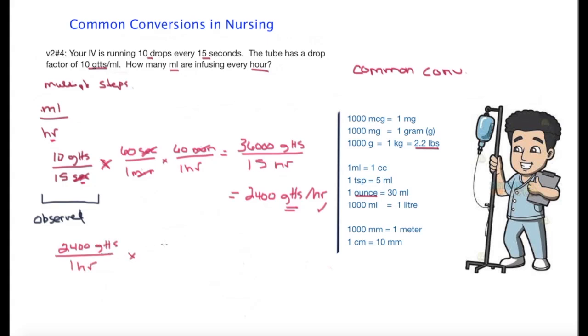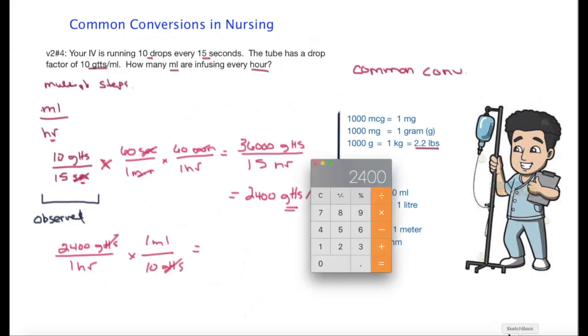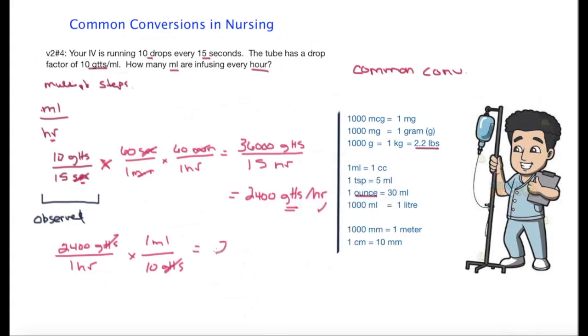So I can cross off the drops, I'm left with mils per hour, and now I can go ahead and solve for the equation. I get 240 mils per hour, and that satisfies the question.